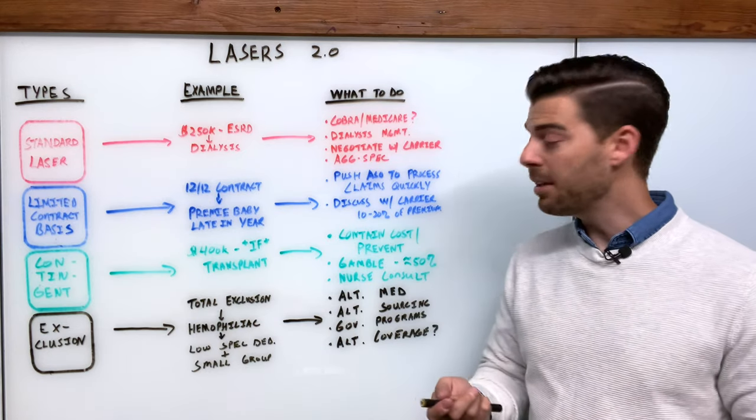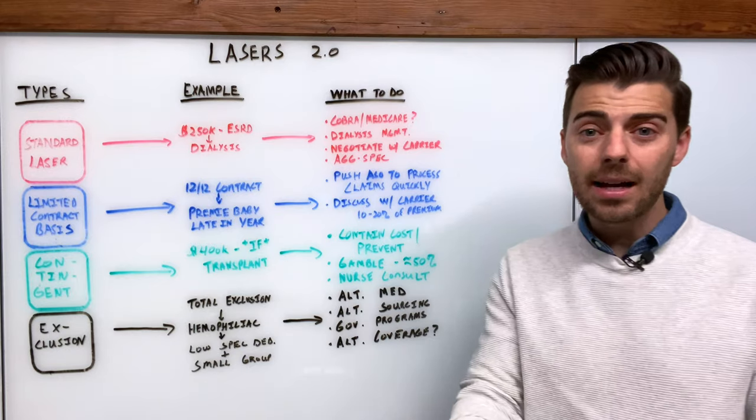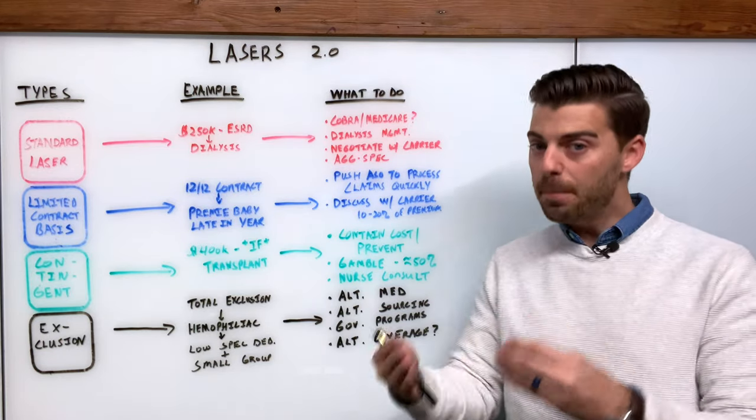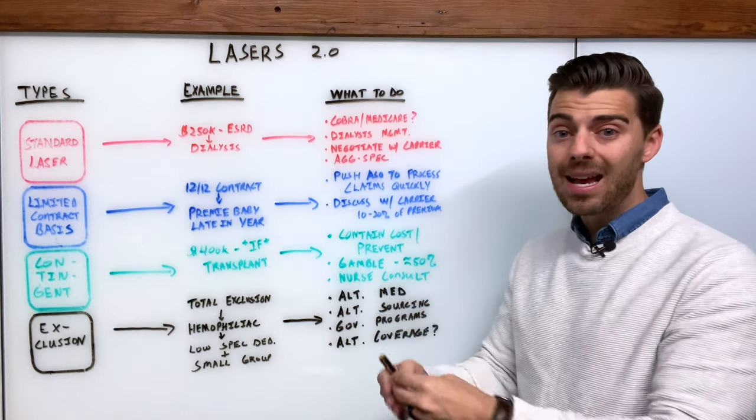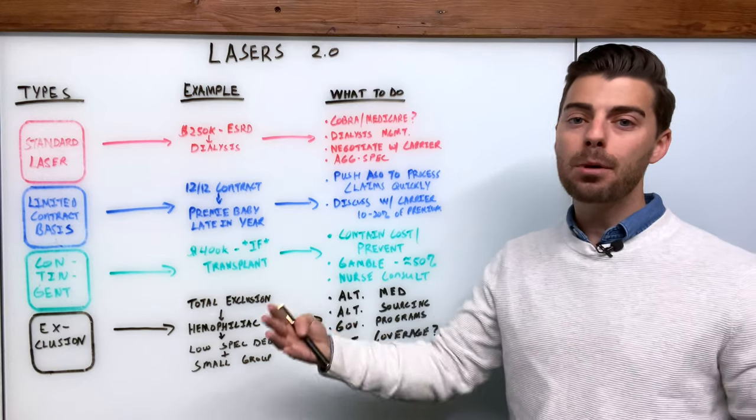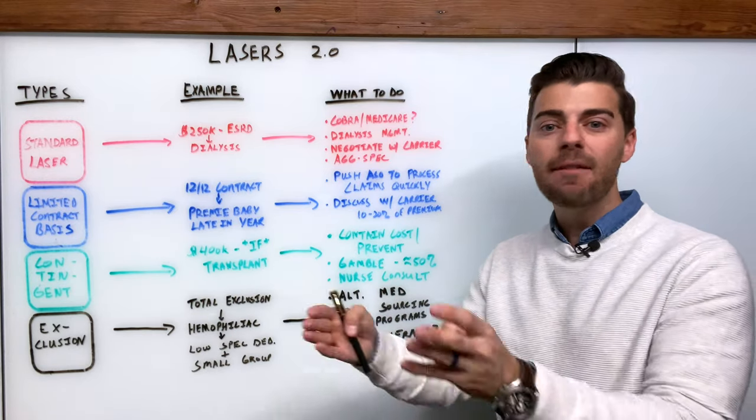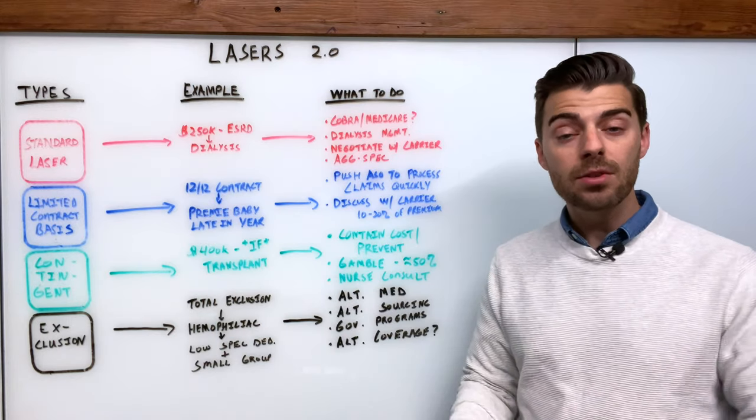You could also discuss with the carrier the potential of just absorbing that cost. About 10 to 20 percent of premium depending on the carrier could be allocated to absorb known risk. Saying yeah, we're gonna gamble, we know this is a risk for the coming year, but we got enough premium in the case that I can set aside 10, 15, 20 percent to cover that person without a laser.